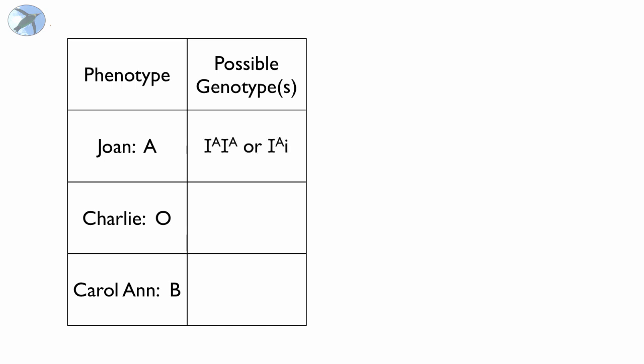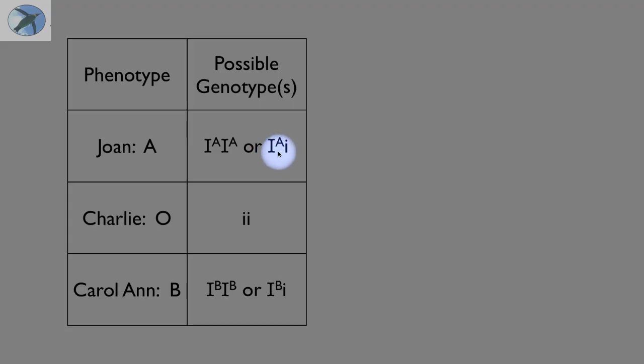So let's do it. If Joan is A, there's two ways she can be A, homozygous or heterozygous for A. Charlie was type O. Carol Ann was type B. She could be homozygous for B or heterozygous for B. Now you should see at this point that in order for Joan to be the mother of this baby, she has to be heterozygous, okay, because what she donated was this little i.